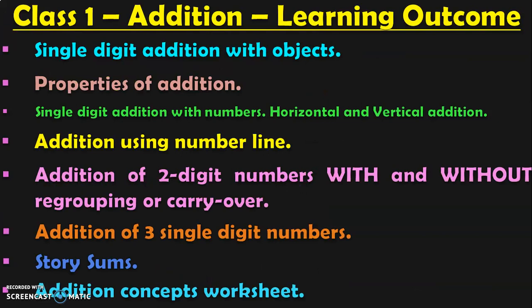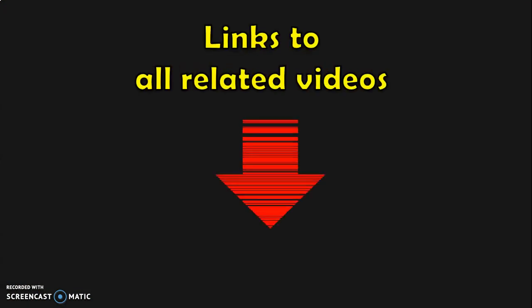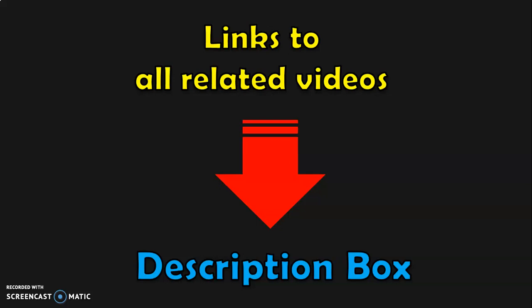Dear viewers, these are all the learning outcomes in Class 1 with respect to addition. I have covered these topics: single digit addition with objects, properties of addition, single digit addition with numbers, both horizontal and vertical addition, addition using number line, addition of two digit numbers with and without regrouping or the carryover concept, and addition of three single digit numbers — all in separate videos. In this video, we covered story sums. Links to all these videos are given below in the description box. You may also click on the in-screen video, which will take you to the playlist containing all the videos on addition for Class 1.